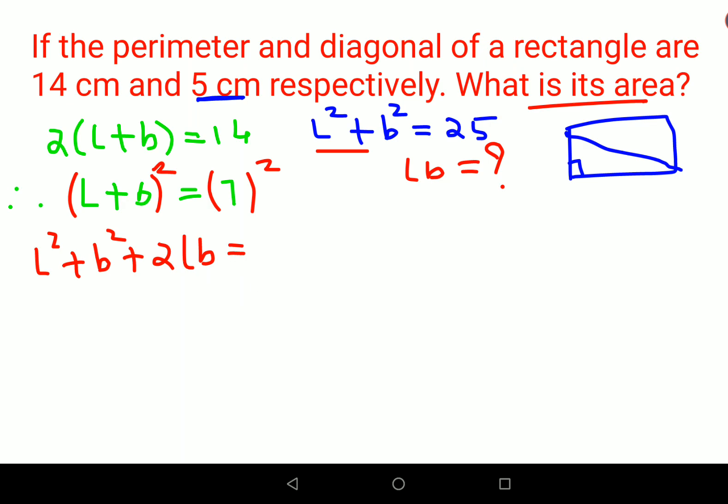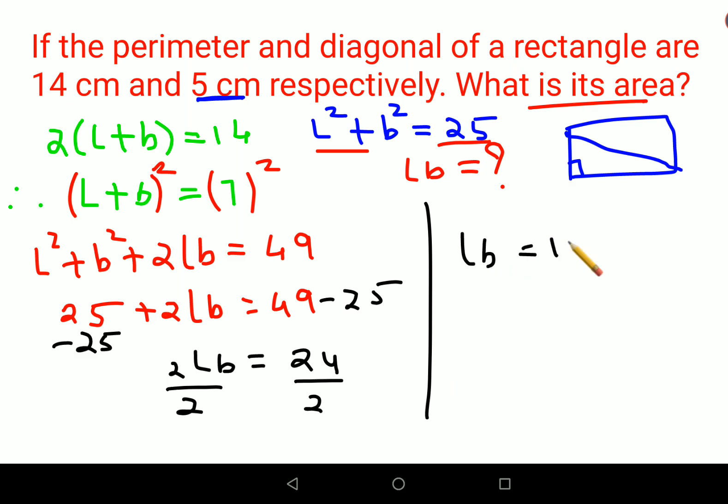And L squared plus B squared is 25, plus 2 times LB equals 49. So now we'll subtract both sides by 25, so I'll get 2 times LB as 24. Dividing both sides by 2, I get the value of LB which is 12.